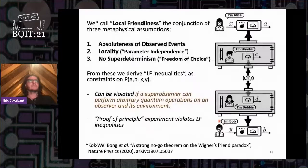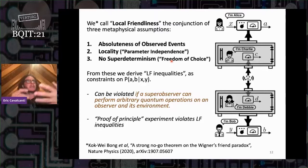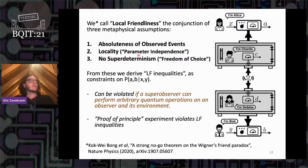We call local friendliness the conjunction of three metaphysical assumptions. By metaphysical I mean assumptions about physical theories that taken separately cannot be disproved, but taken in conjunction they lead to a contradiction. It's absoluteness of observed events, locality in the sense of parameter independence, and no super-determinism, which is equivalent to freedom of choice. From these we derive local friendliness inequalities which are constraints on the observable probabilities, similar to Bell inequalities.